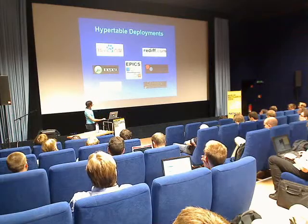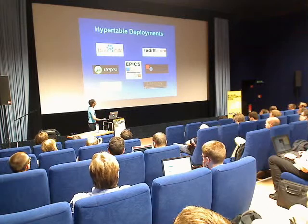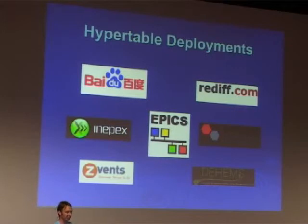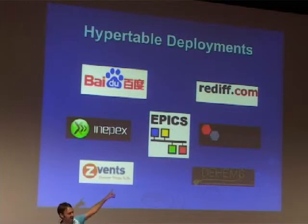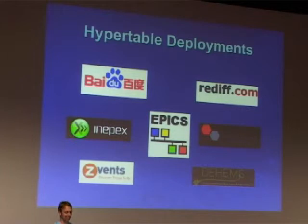Here are some Hypertable deployments. Our biggest one is Baidu, the leading search engine in China — they have a 120-node Hypertable deployment managing over 200 terabytes of data. Rediff.com, they're the largest India-owned and operated web property — they've got Hypertable deployed in a number of places and are deploying it throughout their service, along with a number of other deployments as well.